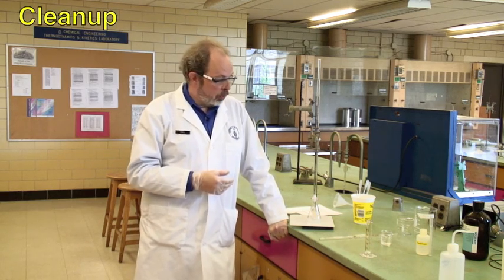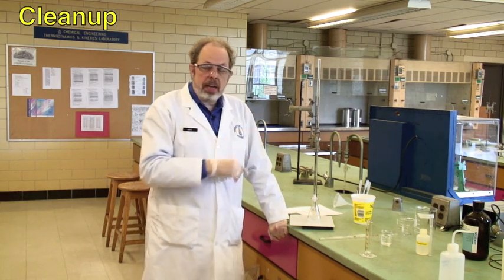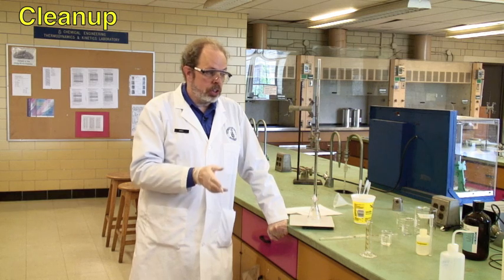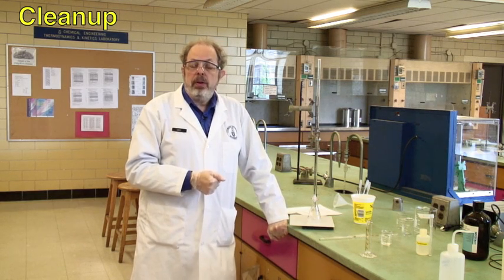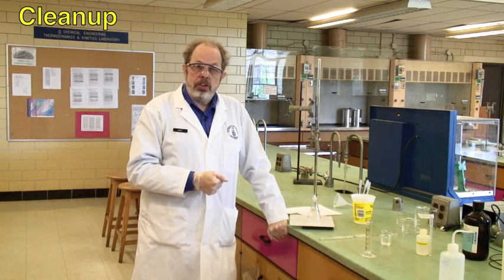Once you have finished doing the titrations, that is monitoring the ethyl acetate hydrolysis at three different temperatures, then you can clean up. All you need to do is put all of these down the sink with lots of running water. Please wash your glassware and away you go. You should now know how to monitor the hydrolysis of ethyl acetate by titrimetric means.